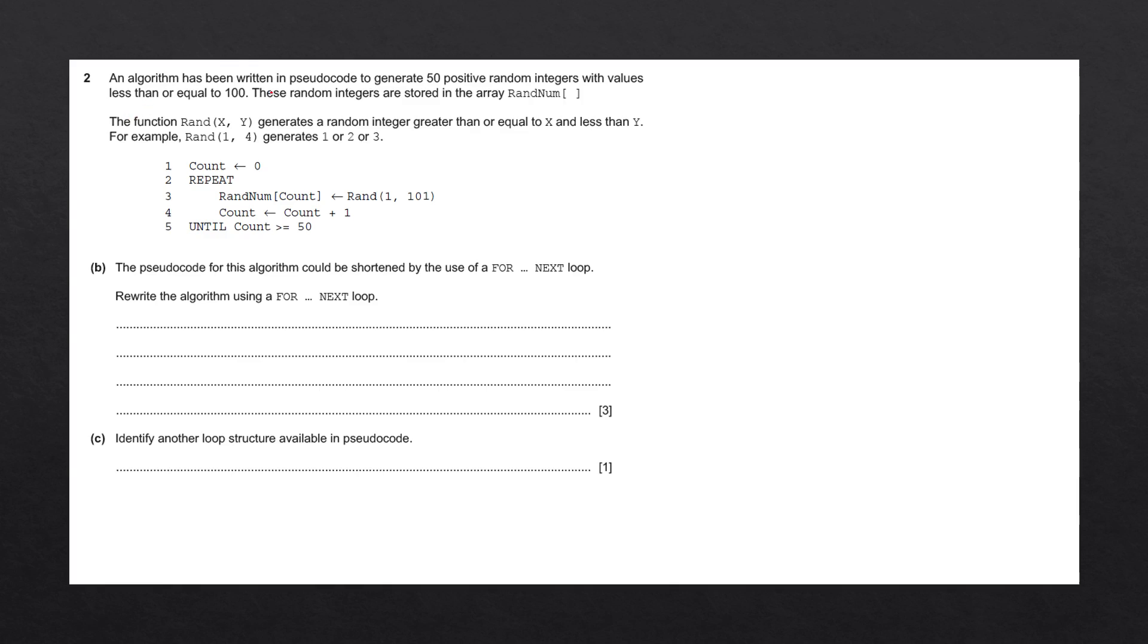An algorithm has been written in pseudocode to generate 50 positive random integers with values less than or equal to 100. These random integers are stored in the array randNum. The function rand(x,y) generates a random integer greater than or equal to x and less than y.